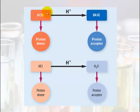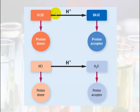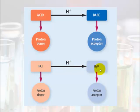So we've got an acid, which is a proton donor, and a base, which is a proton acceptor. An acid will give its proton to a base — the acid donates, the base accepts. For example, hydrochloric acid will give its hydrogen ion to water (H2O) to make hydronium (H3O+). Water in this case is acting as a base — we'll discuss this further as water is called an amphiprotic substance.